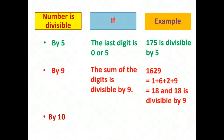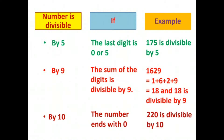Now the divisibility rule of 10. A number will only be divisible by 10 if it ends with 0. Here see the example 220. The last digit of the number is 0, so 220 will be divisible by 10.